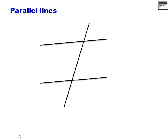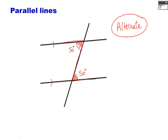Another fact with parallel lines: if this angle here is 50 degrees, then this angle on the other parallel line is also 50 degrees. These are alternate angles — sometimes called Z angles because they sit on the insides of a Z shape. However, we must use the term 'alternate angles,' not 'Z angles.' For example, if one angle is 130 degrees, the alternate angle is also 130 degrees.